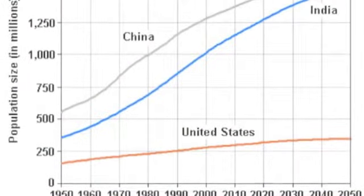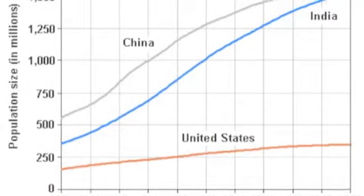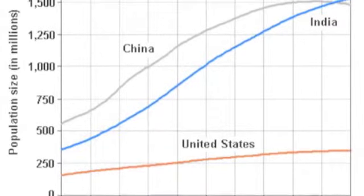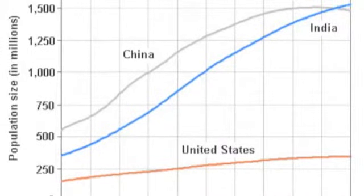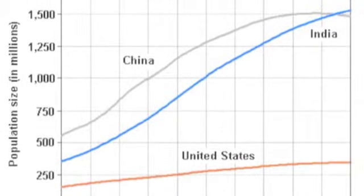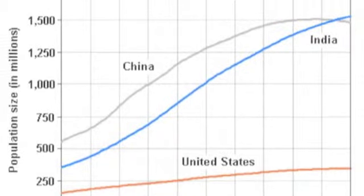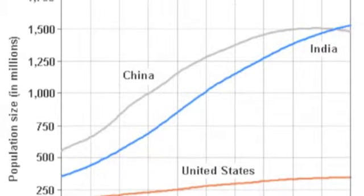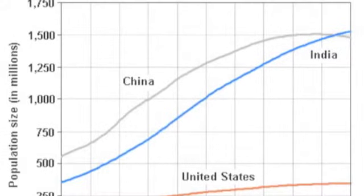In 2050, India's population is going to be approximately 1.69 billion people. That will be 0.38 billion more people than there will be in China, where it will be only about 1.31 billion people.